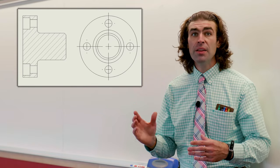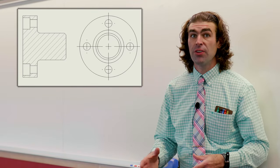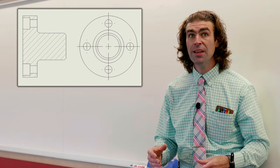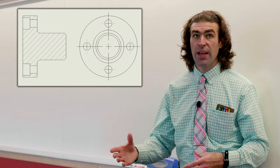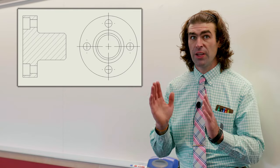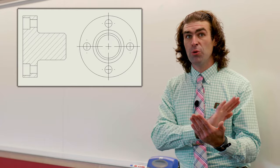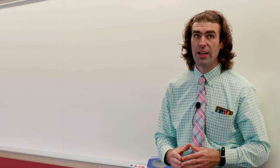Now the interesting thing about the full section is you're not going to use a cutting plane. It's just understood that it's a section of that part. Say you have a front view and then you have a right view. That right view would be sectioned and it's just understood that it's in projection.